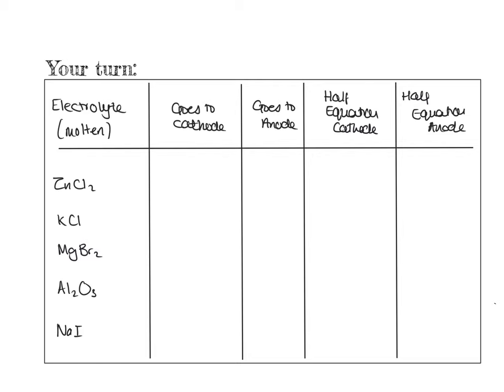Now it's your turn. Here are five molten electrolytes you might put into an electrolysis cell: zinc chloride, potassium chloride, magnesium bromide, aluminium oxide, and sodium iodide. Figure out which ion goes to the cathode, which goes to the anode, and try to write some half equations. Pause the video now and have a go, and I'll go through the answers in a moment.